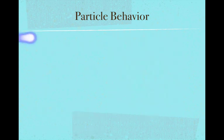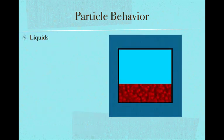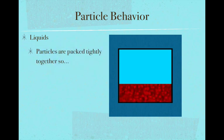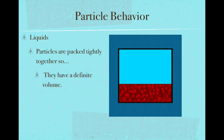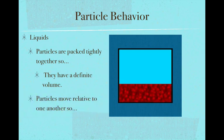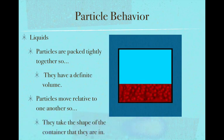When we take a look at liquids, it's kind of similar to a solid in that the particles are packed tightly together, so they have a definite volume — they can't be compressed or expanded. But one thing they do differently is those particles do move around one another, and since they do that, they take the shape of the container that they're in, so they do not have a definite shape.